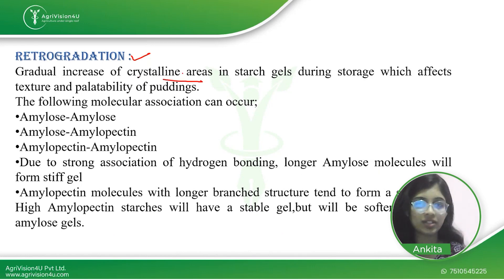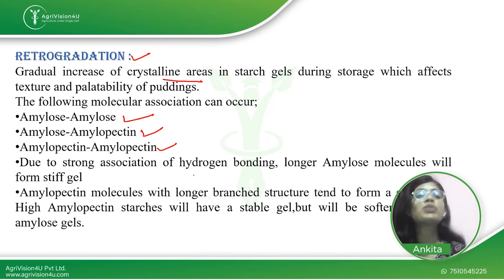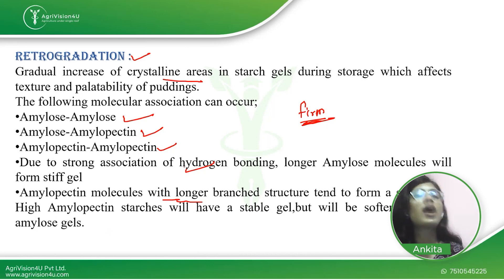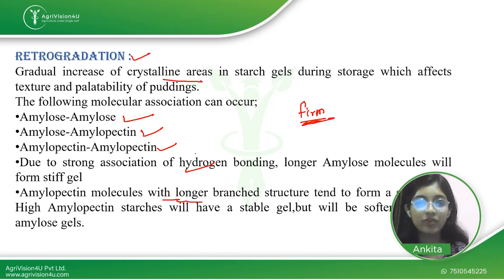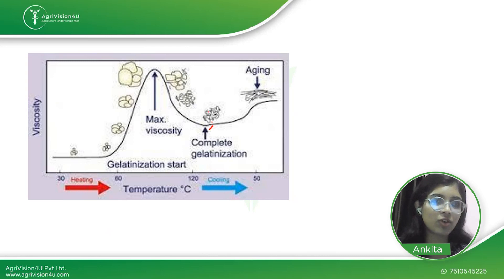The next important concept is retrogradation. In retrogradation, there is an increase in the crystalline area of the starch molecule, which affects the palatability and texture of the product. Retrogradation can occur in three forms: amylose-amylose, amylose-amylopectin, and amylopectin-amylopectin associations. Due to strong hydrogen bonding, amylose molecules form a stiff or firm gel, while high amylopectin forms a stable but softer gel.